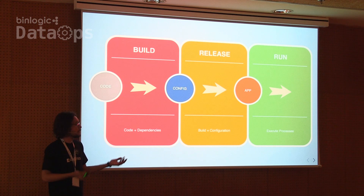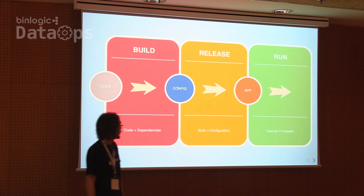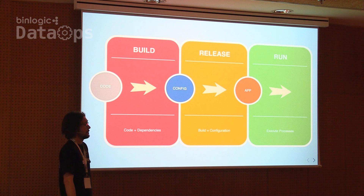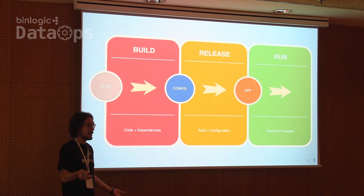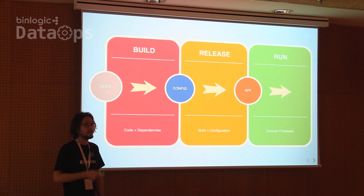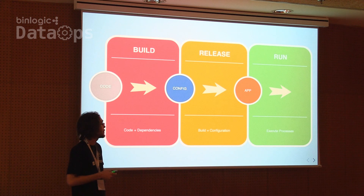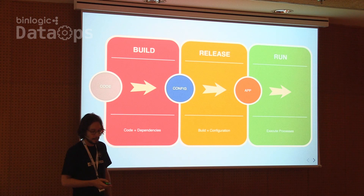In the 12-factor manifesto, they talk about the build-release-run process. Basically, we take our code from GitHub or any version control system, bundle it with all dependencies — package manager dependencies and system libraries — creating a unified bundle. Then we combine that with configuration from our systems, and the application is ready to be started and serve requests.